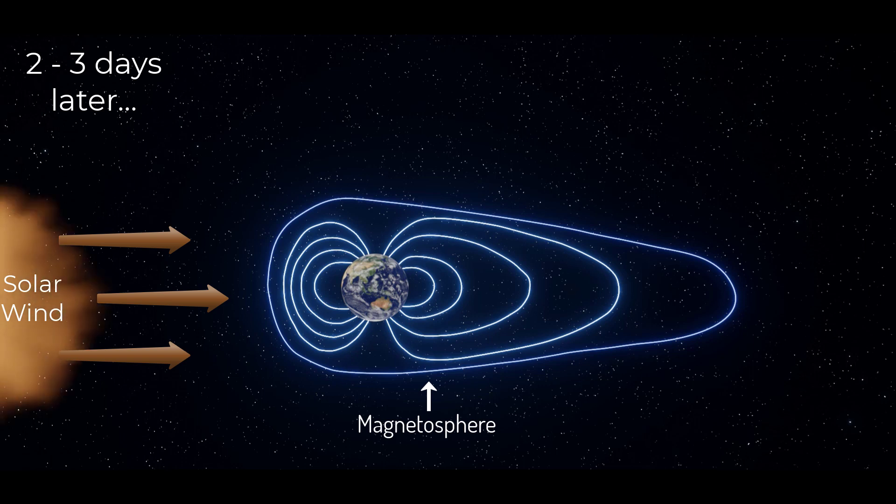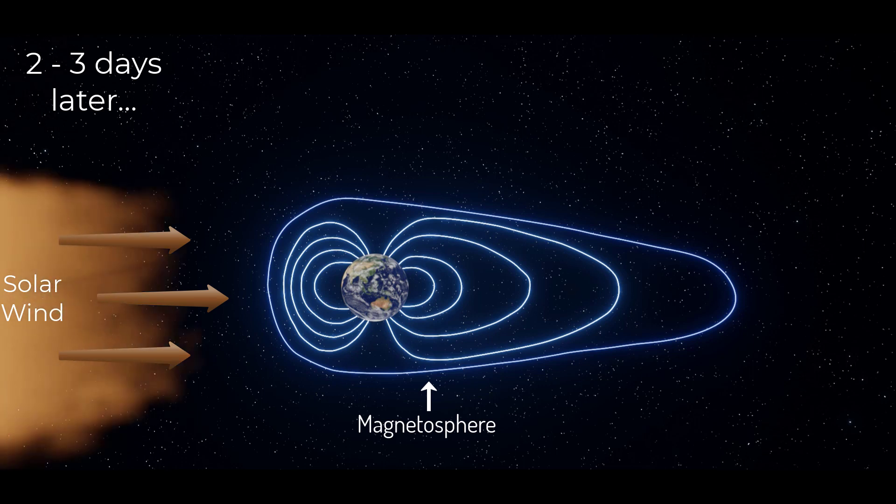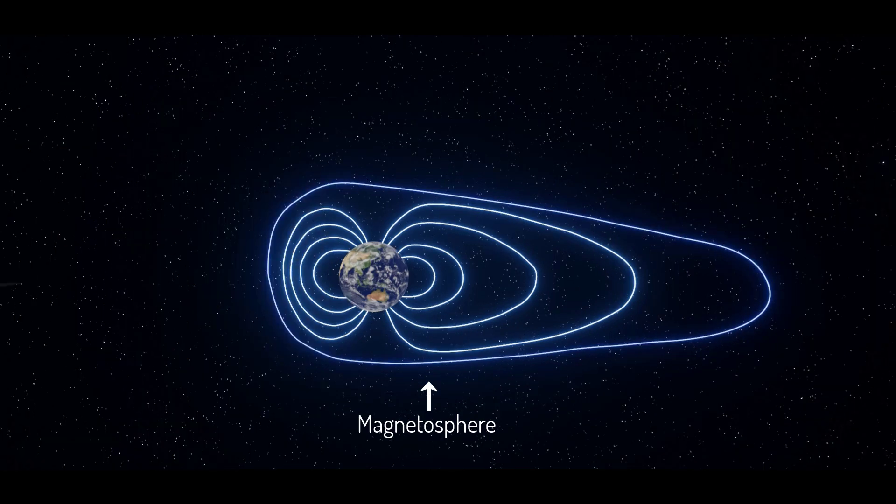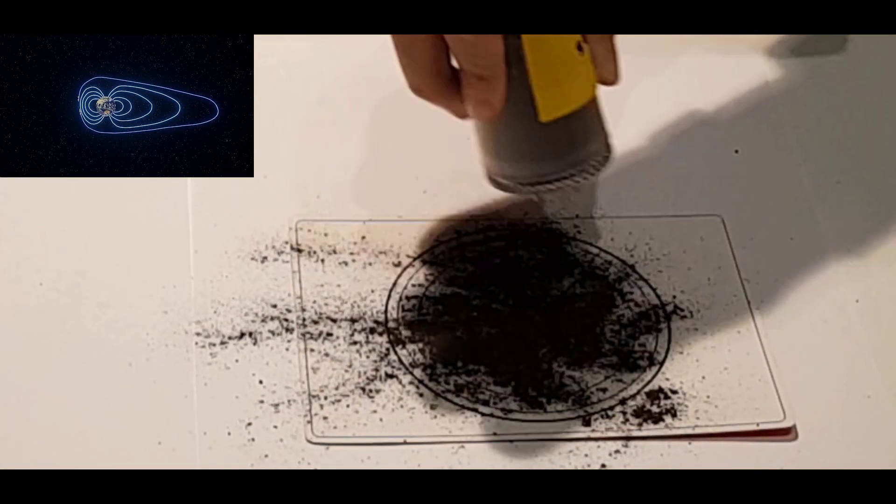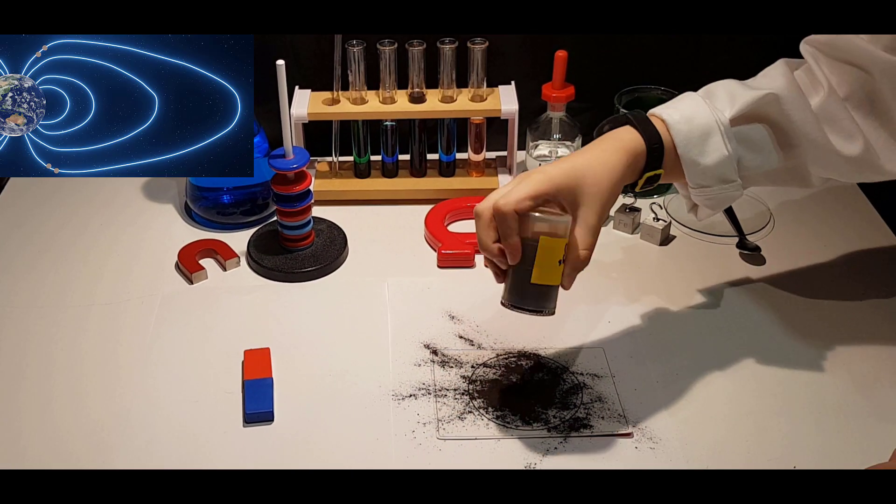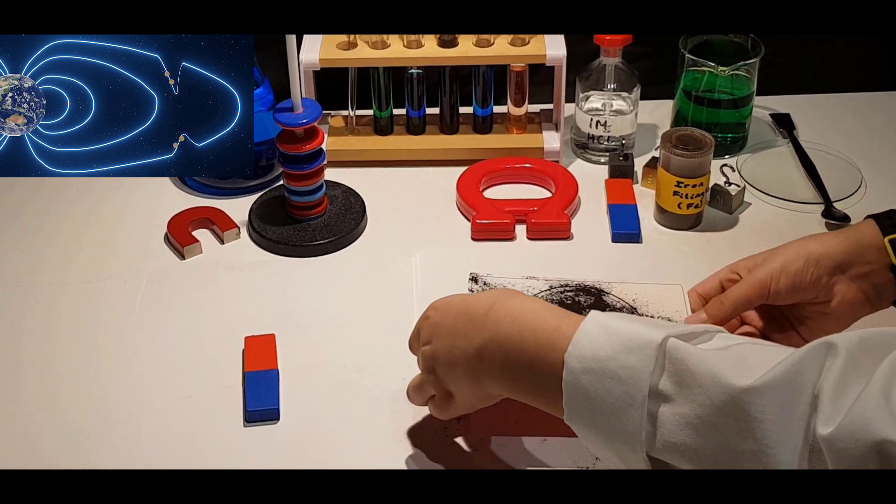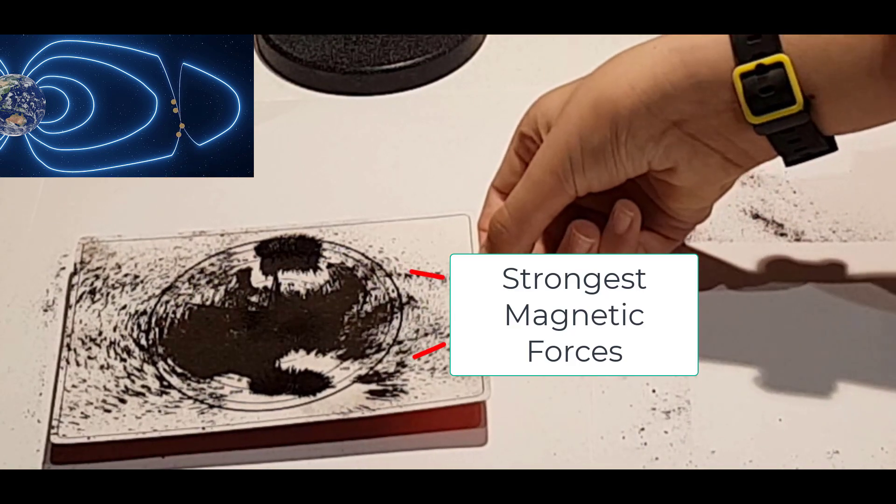The Earth's magnetic shield, the magnetosphere, deflects most of the solar wind, but 2% gets trapped in it, forcing the charged particles to the geomagnetic north and south poles. This is similar to how iron filings get attracted to the poles of a magnet.